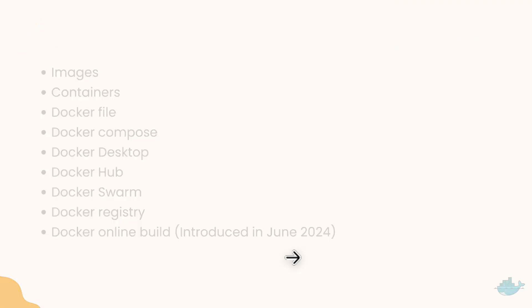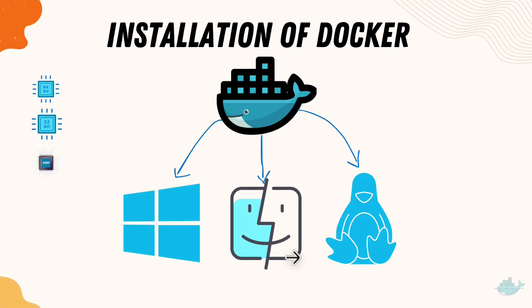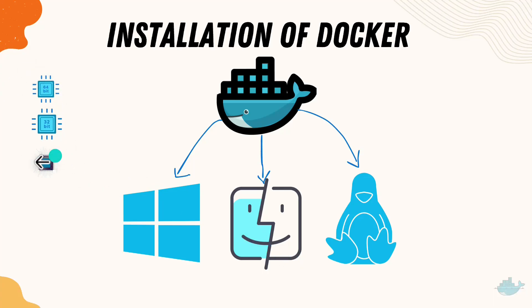We'll first focus on the installation of Docker. In 2024, Docker has evolved so much — you can run Docker Desktop not only on Windows but also on Linux and Mac operating systems. Previously, Docker Desktop was essentially Windows-only, but now you can use it across Windows, Mac, and Linux. It also supports 64-bit, 32-bit, and ARM architecture processors, so Docker Desktop runs on Windows ARM, Mac ARM, and Linux without any problem.